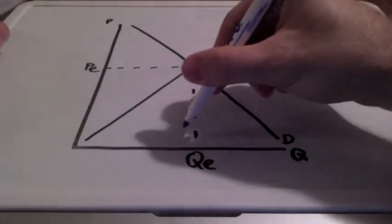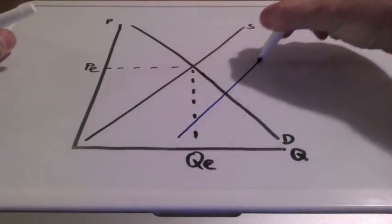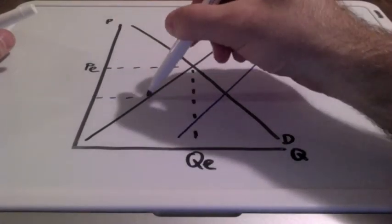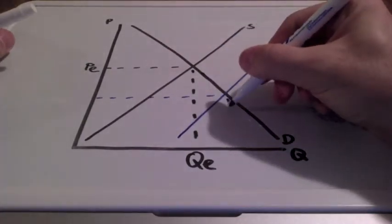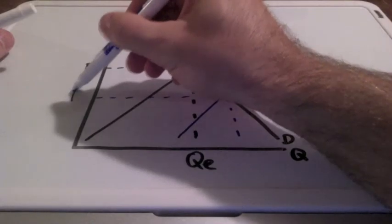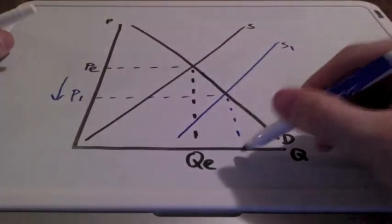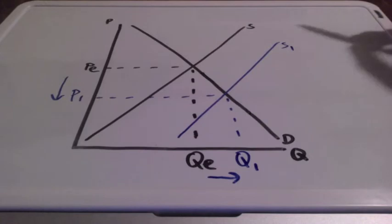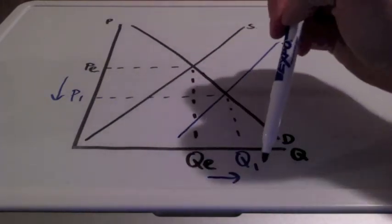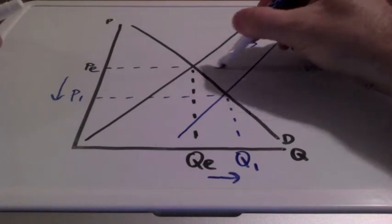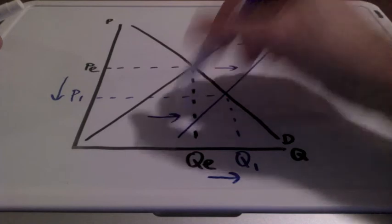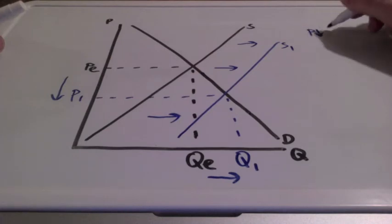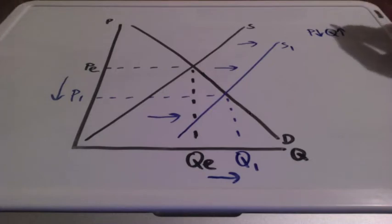In this example, we are going to take a look at an increase in supply. When we have an increase in supply, our prices will go down and our quantity will increase. Say for example, the cost of production decreased, so firms will choose to supply more goods and services, which will result in a rightward shift in supply. So when prices go down, quantity will increase.